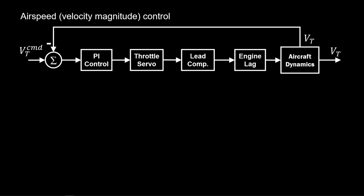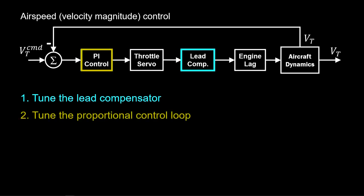The airspeed control is tuned separately from the glide slope. First, we construct the lead compensator to cancel the slow engine lag pole and place it further in the left half plane. Second, we tune the proportional control loop to obtain an adequate rise time. Third, we tune the integral control loop for steady-state tracking.